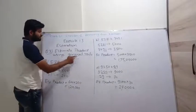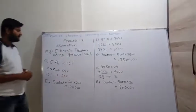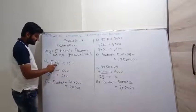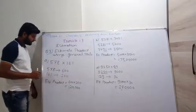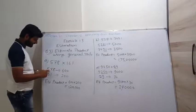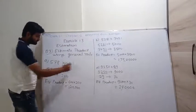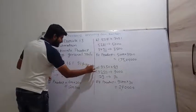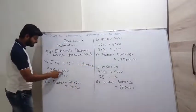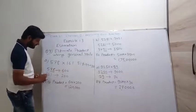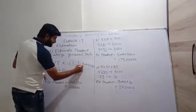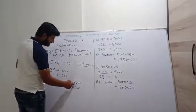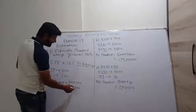Question 3: estimate the product using the general rule. For 578 into 161, these are 100-plus values. 578: here 78 lies between 51 to 99, so it becomes 600. And 161: here 61 lies between 51 to 99, so it becomes 200. The estimated product is 600 into 200, which gives 1,20,000.